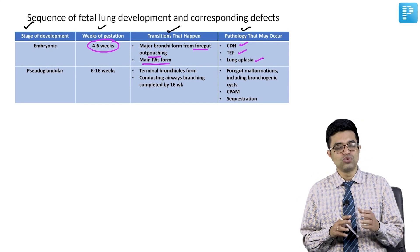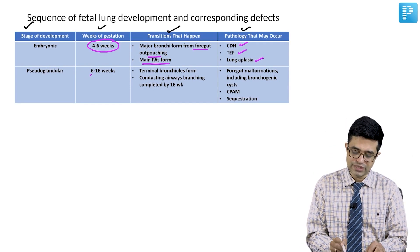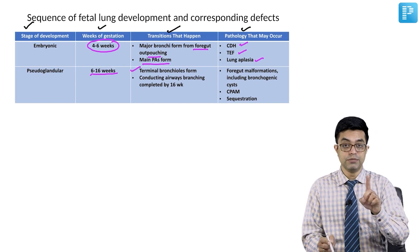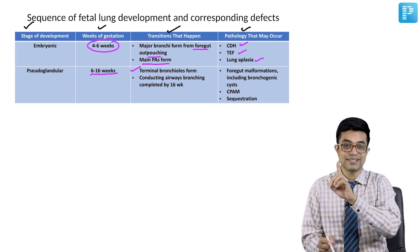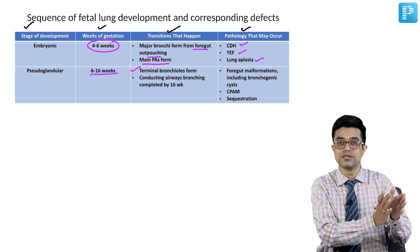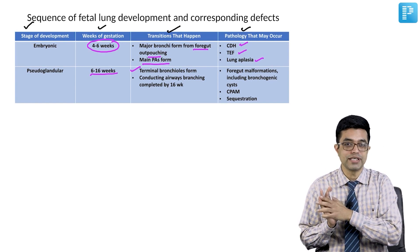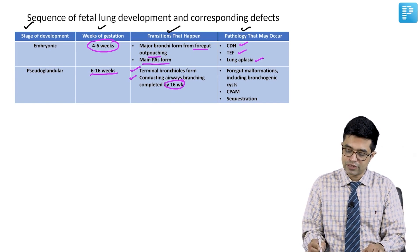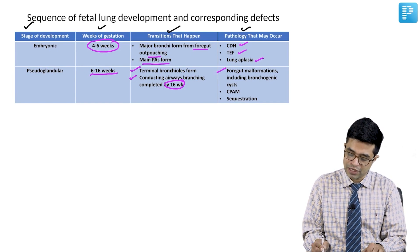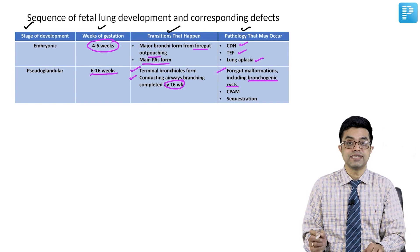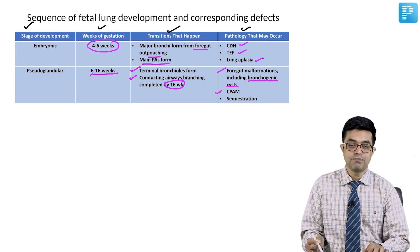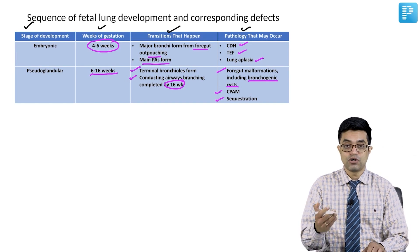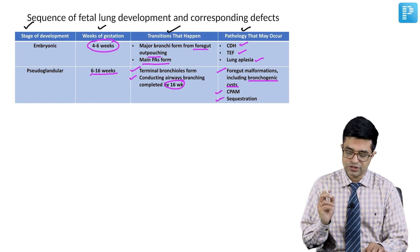The second stage is the pseudoglandular stage, occurring between six to 16 weeks. Here the terminal bronchioles — the conducting zone — form, but the gas exchange part has not yet started forming. Conducting airways branching is completed by 16 weeks. Pathologies include foregut malformations including bronchogenic cyst, CPAM (congenital pulmonary airway malformation, previously called CCAM), and sequestrations.